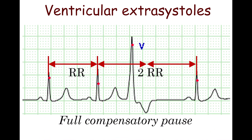A ventricular extrasystole is often followed by a full compensatory pause. In most cases an impulse from the ventricles does not spread to the atria; thus, it does not reset the sinus node. The next beat after the extrasystole appears after an interval equal to the double preceding R-R interval.